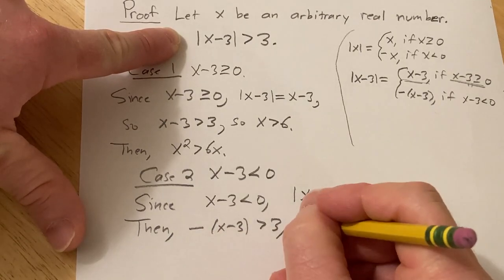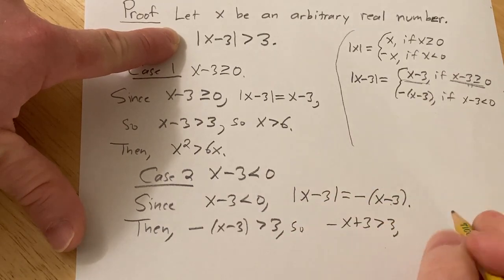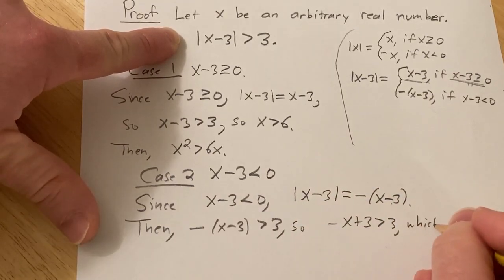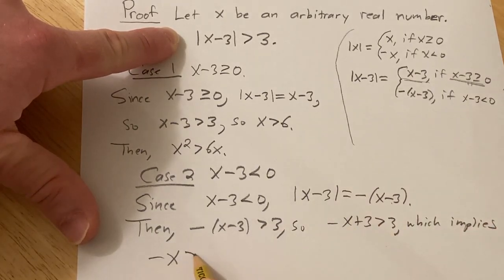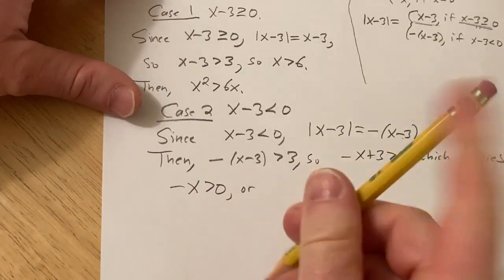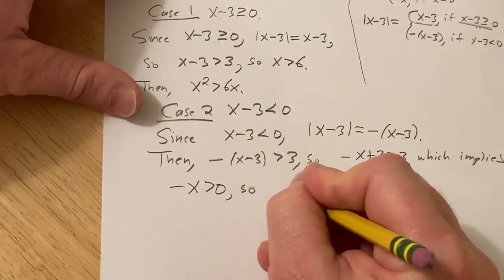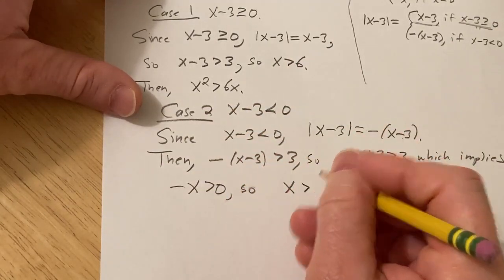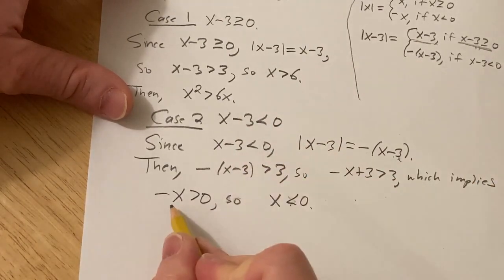So this means that negative x plus 3 is greater than 3, which implies that you can subtract 3, so you get minus x bigger than 0. But you can divide by negative 1. So I'll use the word so again. So x is bigger than 0, less than 0, sorry, less than 0, because we're dividing by negative 1. When you do that, you reverse the inequality sign.